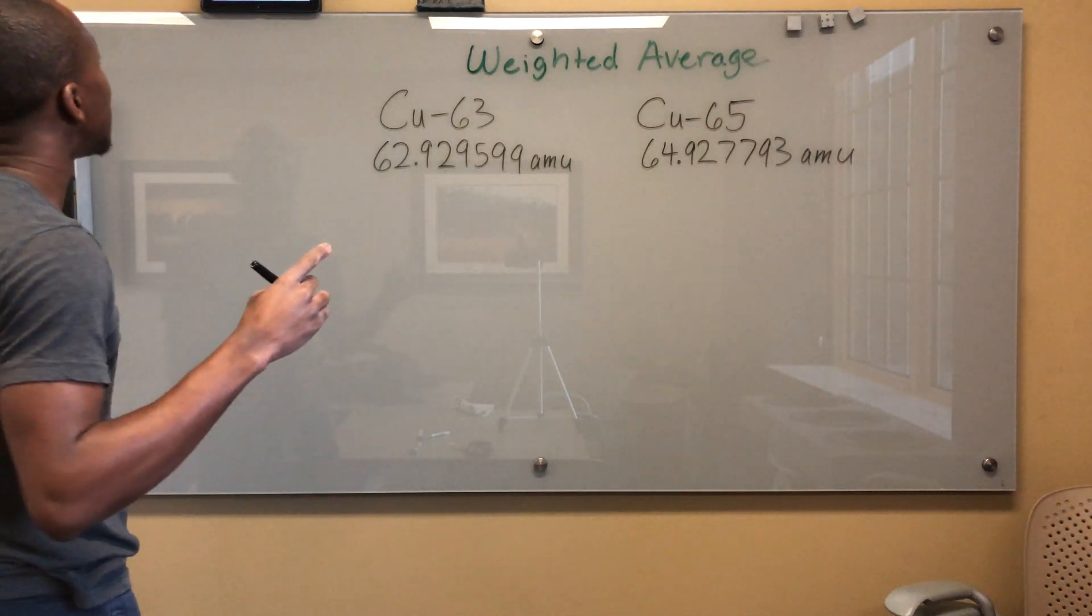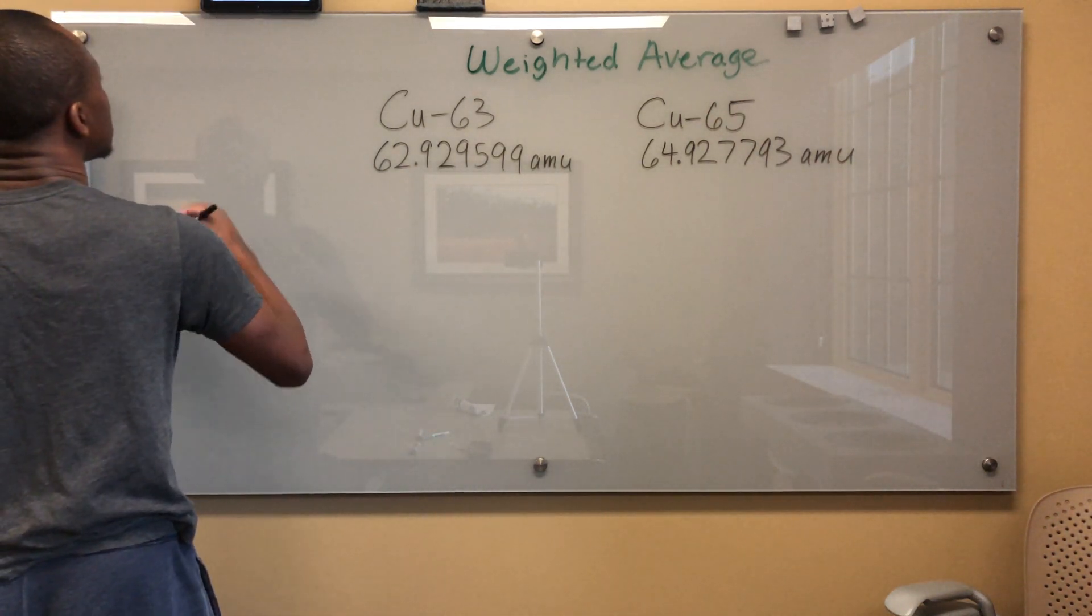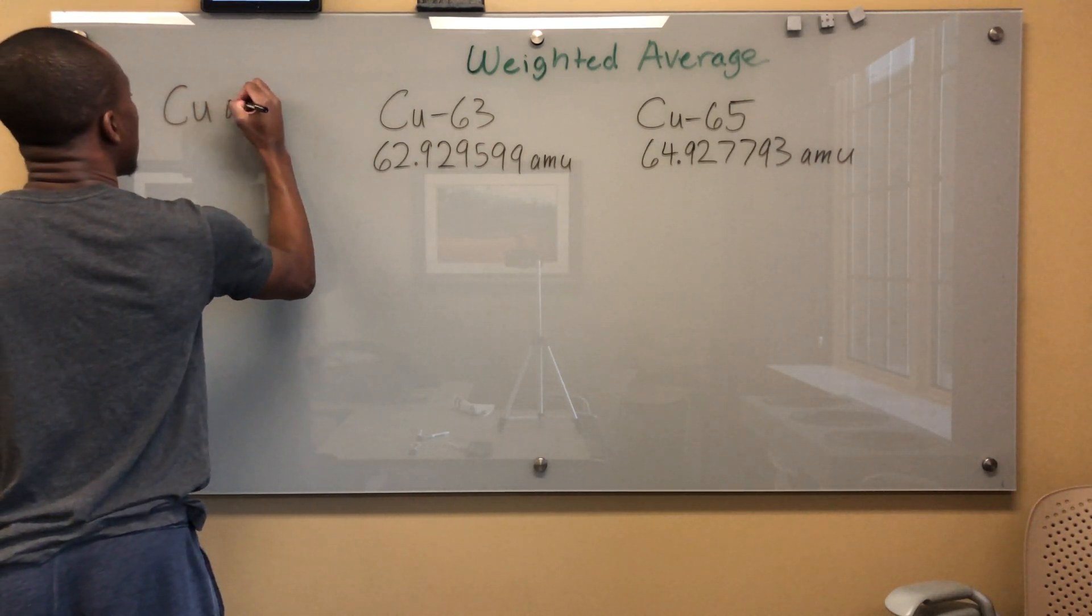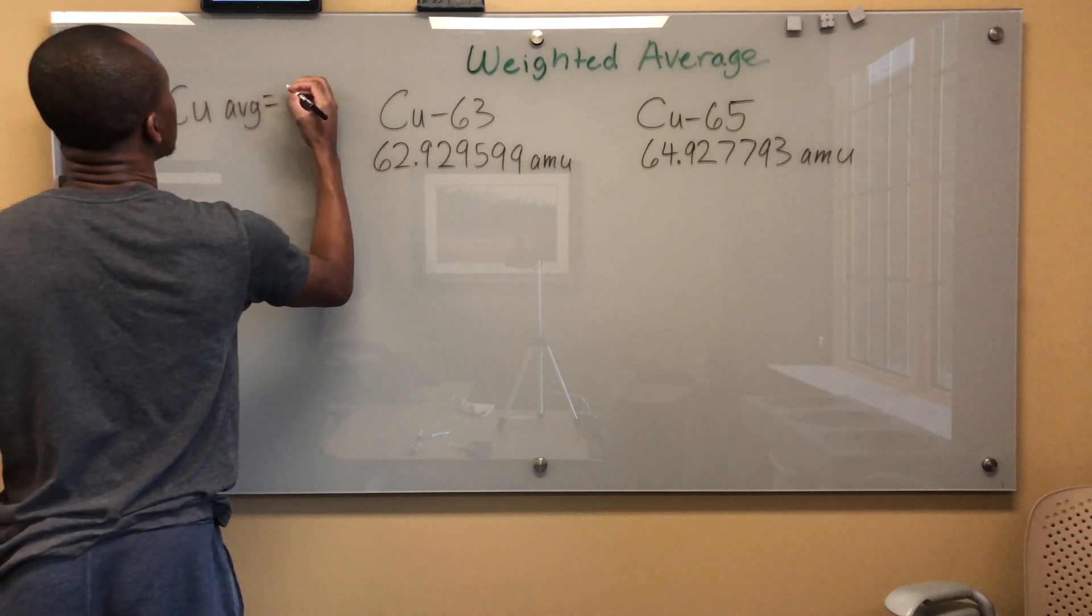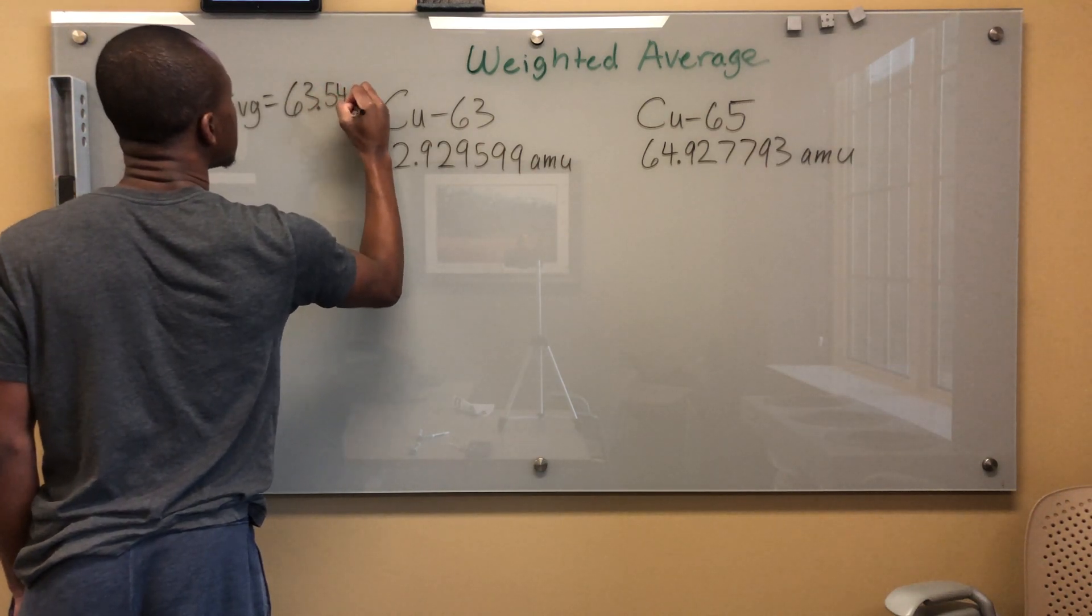So now, it says that the weighted average, right? So I'm just going to say, I'll just put it here. So Cu average equals 63.546.